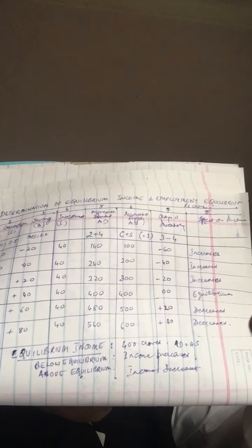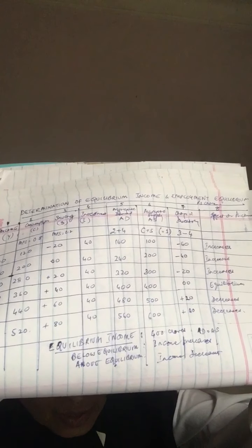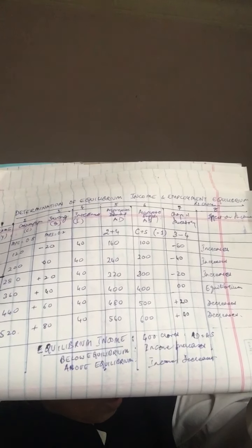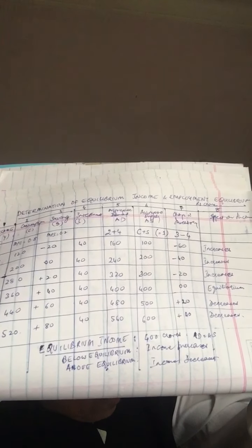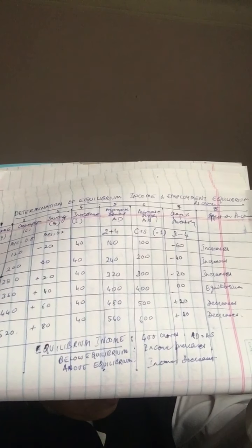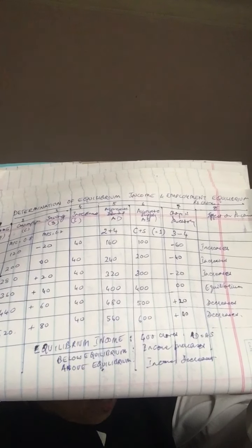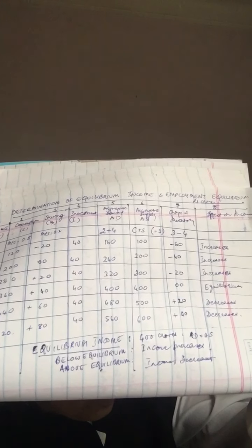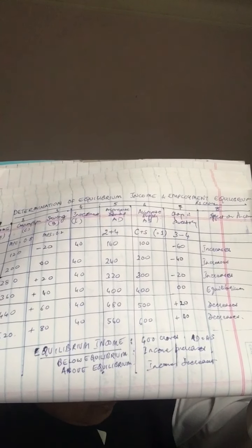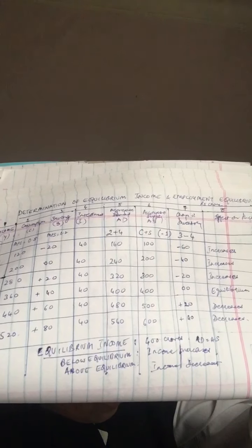In the first column we take the income, in the second column is consumption, third is saving, fourth is investment, fifth is aggregate demand, sixth is aggregate supply, seventh is change in the inventory, and eighth is effect on income. As a head note it's written as rupees in crores. Now MPC is given as 0.8 and MPS is equal to 0.2.